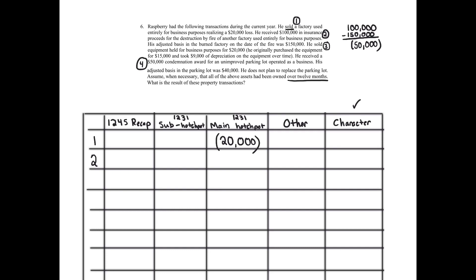The next step is characterization. Under the general rule, is it a capital gain or capital loss? No — it's not a sale or exchange. It's an involuntary conversion — we've got a fire. So it can't be a capital gain or capital loss under the general rules. We go to Section 1231. We've got a fire, so that's the sub-hodgepot because the property is business property held for more than a year. Sub-hodgepot: $50,000 loss. Before we put it in the sub-hodgepot, does Section 1245 apply? No — it's real property and it's also a loss. Section 1245 applies to personal property with gain. So we put $50,000 of loss in the 1231 sub-hodgepot.